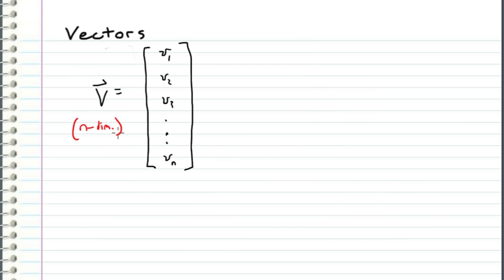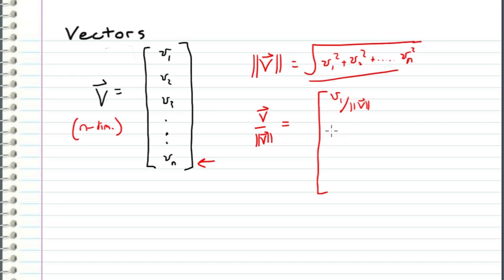So once we start working with larger dimensions, and we start having vectors with more than 3 or 5 or 10 components, we can still apply these same ideas of magnitude and direction to these larger vectors. So I can generalize these equations to n dimensions where I can say that the magnitude of an arbitrary vector is equal to the square root of v1 squared plus v2 squared all the way to the nth component squared. And I can represent the direction of v as the unit vector divided by its magnitude as computed above. So this would look like v1 over magnitude of v, v2 over magnitude of v, and so on and so on.